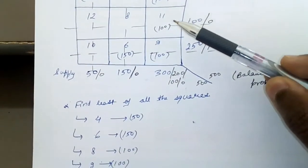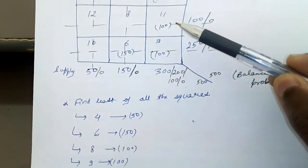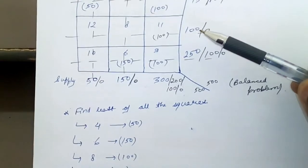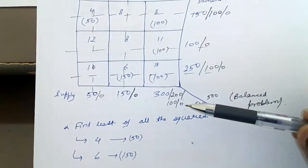So all the cells are allocated: 4, 11, 8, 6, and 9.